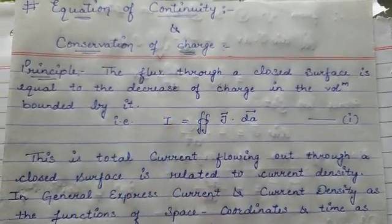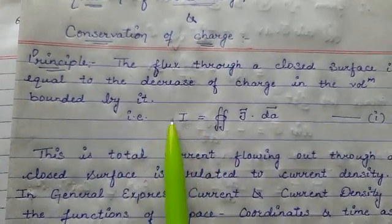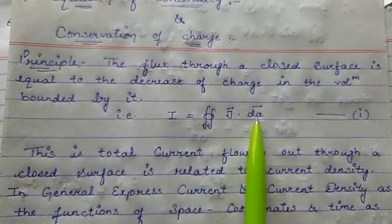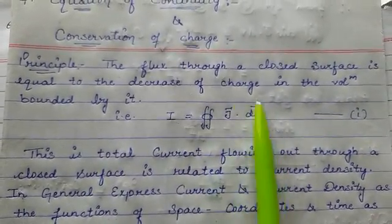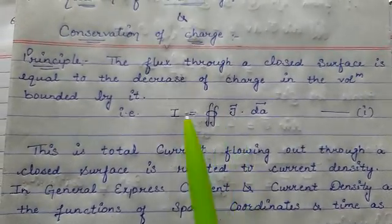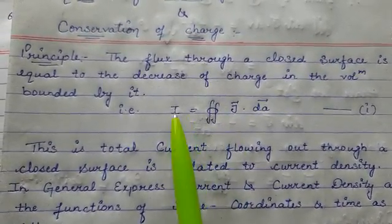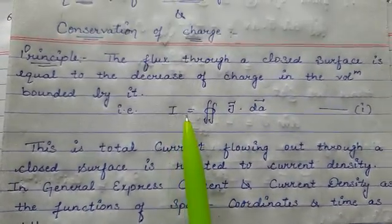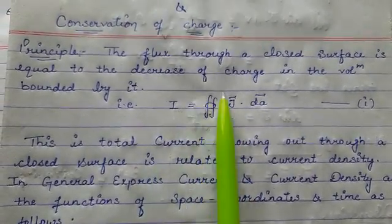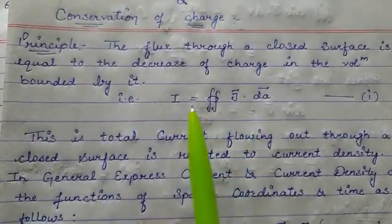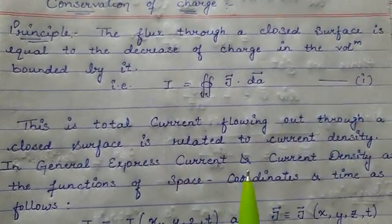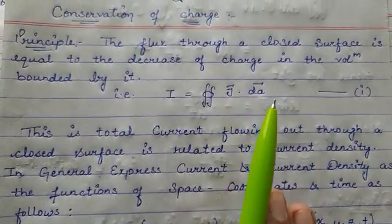What it means: the outflow of charge must be balanced by the rate of decrease of charge within the closed surface. That is, I is equal to the closed surface integral of J·dA. This is the relation between current density and current — the total current flowing out through a closed surface is related to current density. Write it as equation number 1.